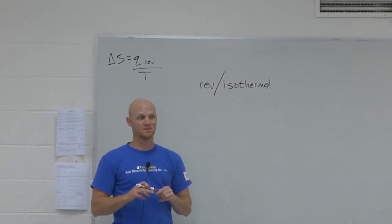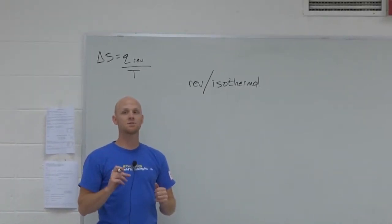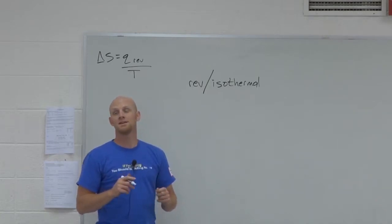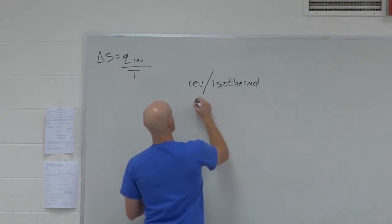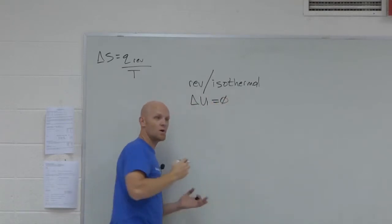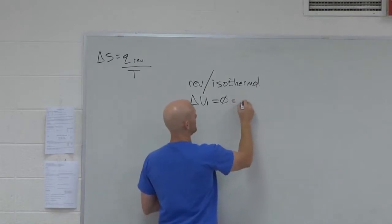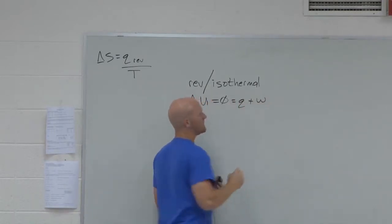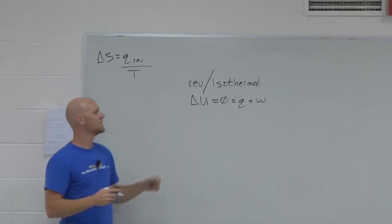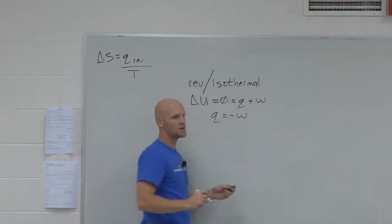What does that tell you? Temperature is constant. If the temperature of a gas is constant, then what else is constant? Internal energy. And so in this case, delta U is equal to zero. What is delta U also equal to by definition? My goal is to get Q. Q is going to equal negative W.